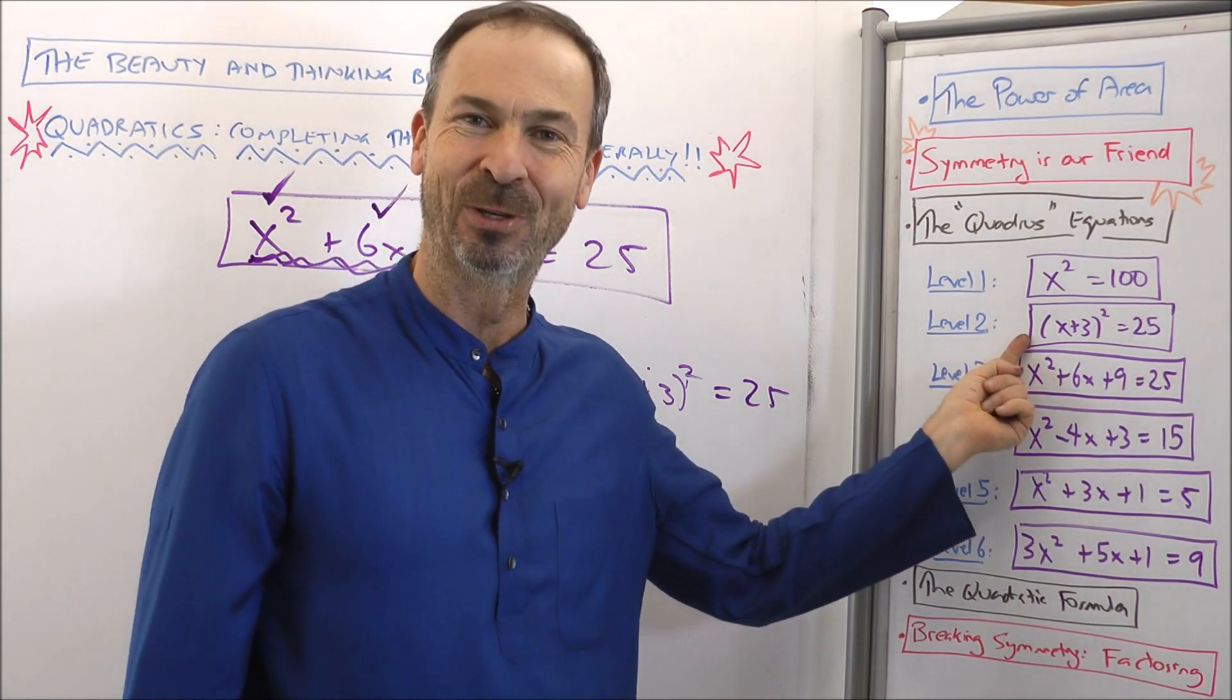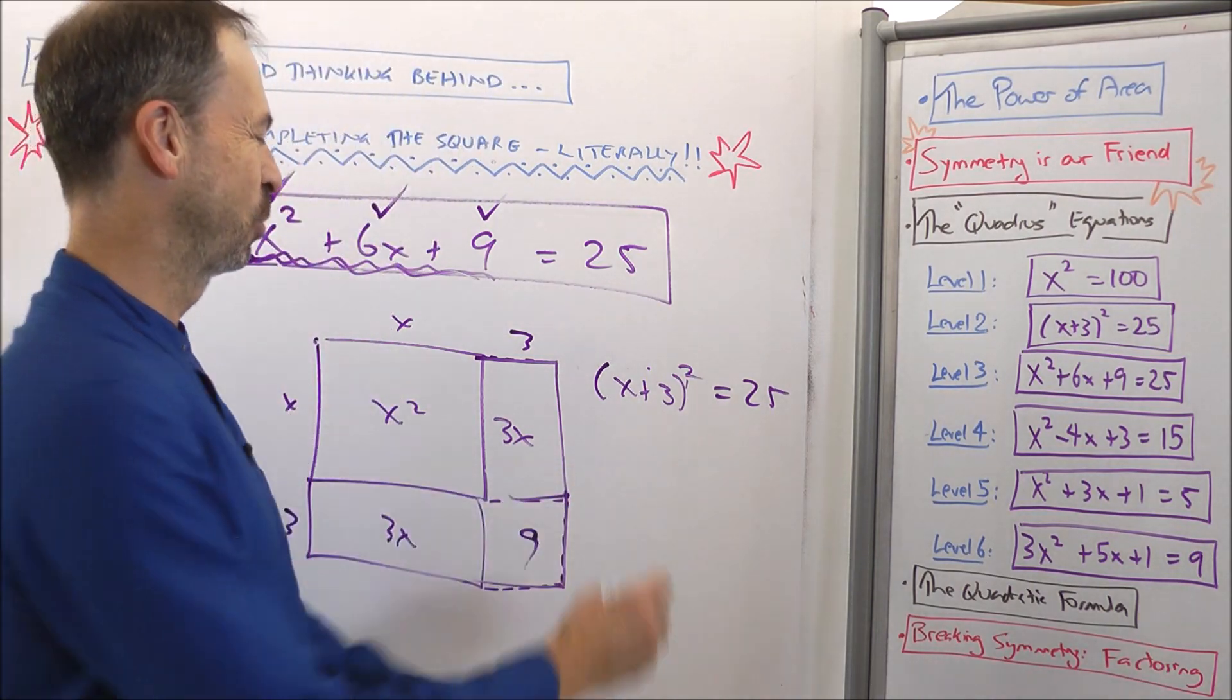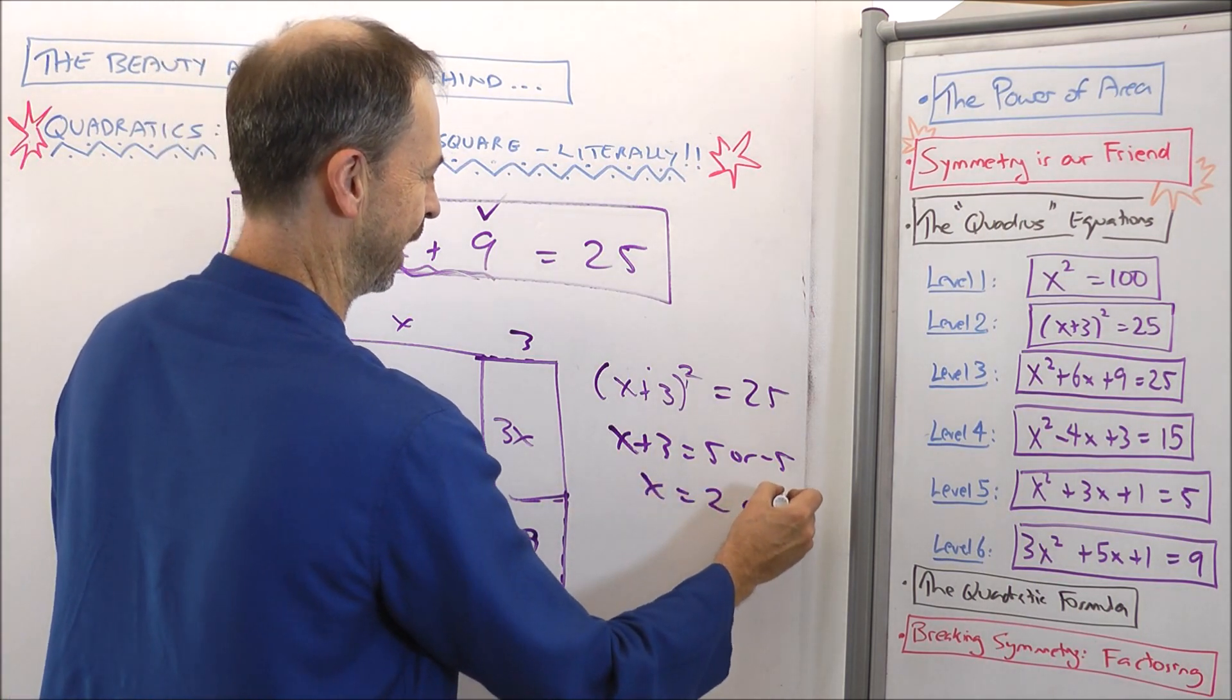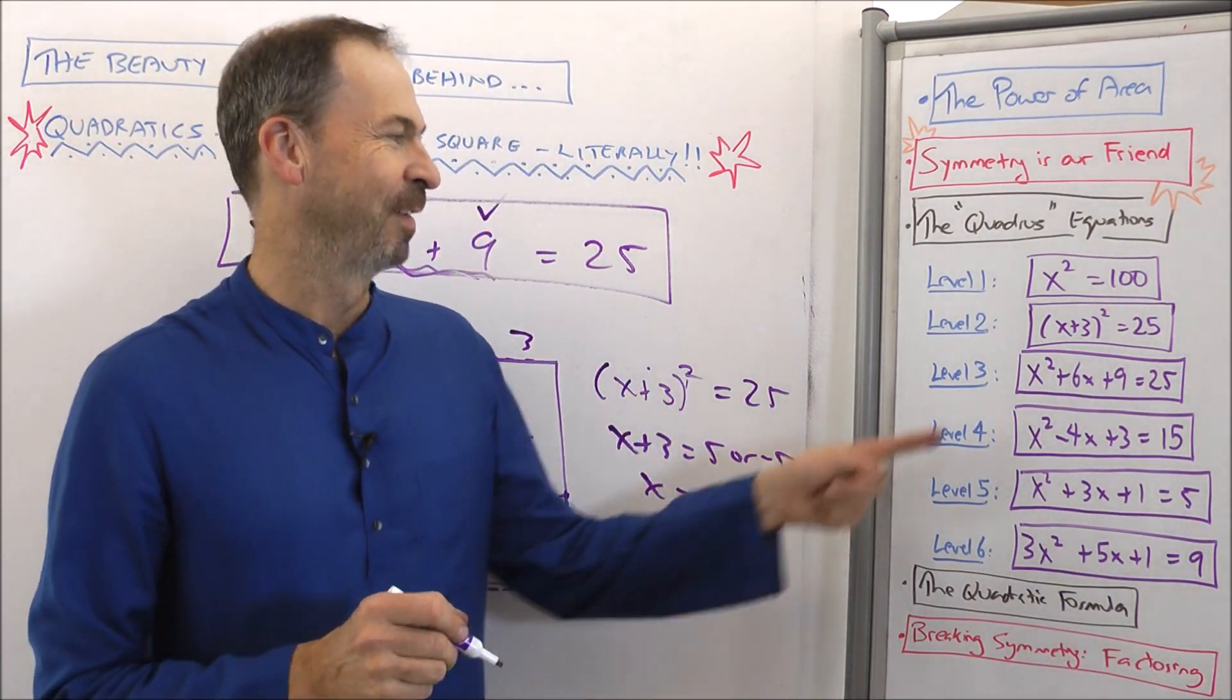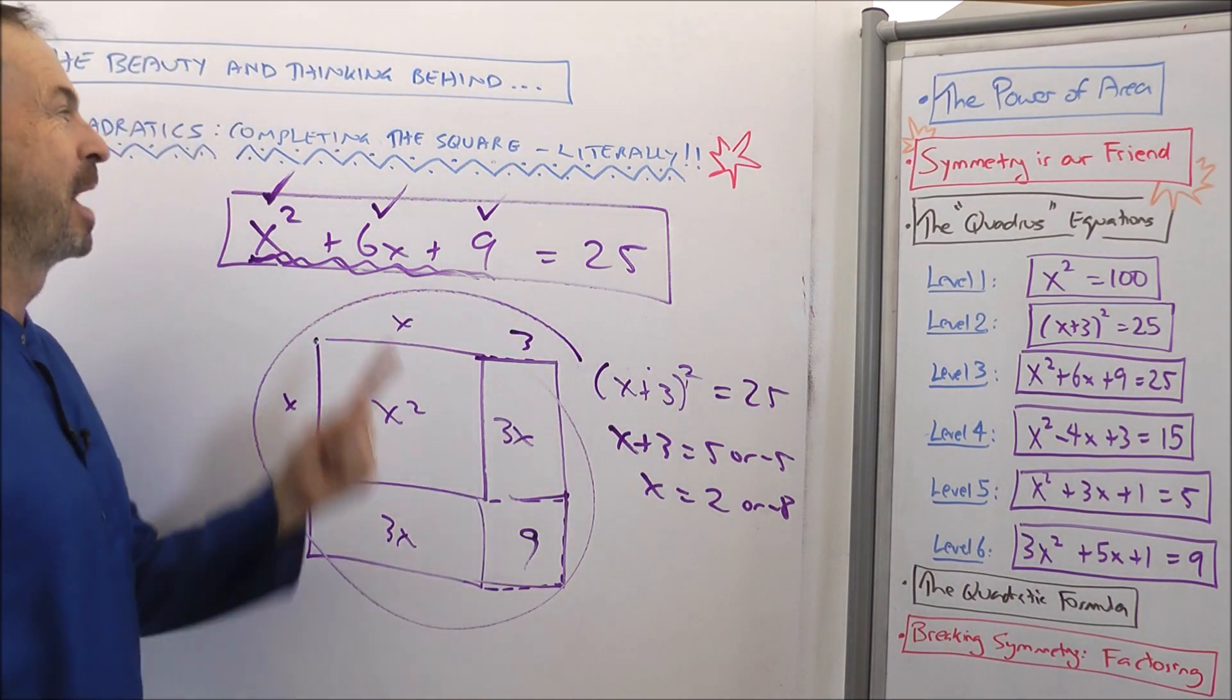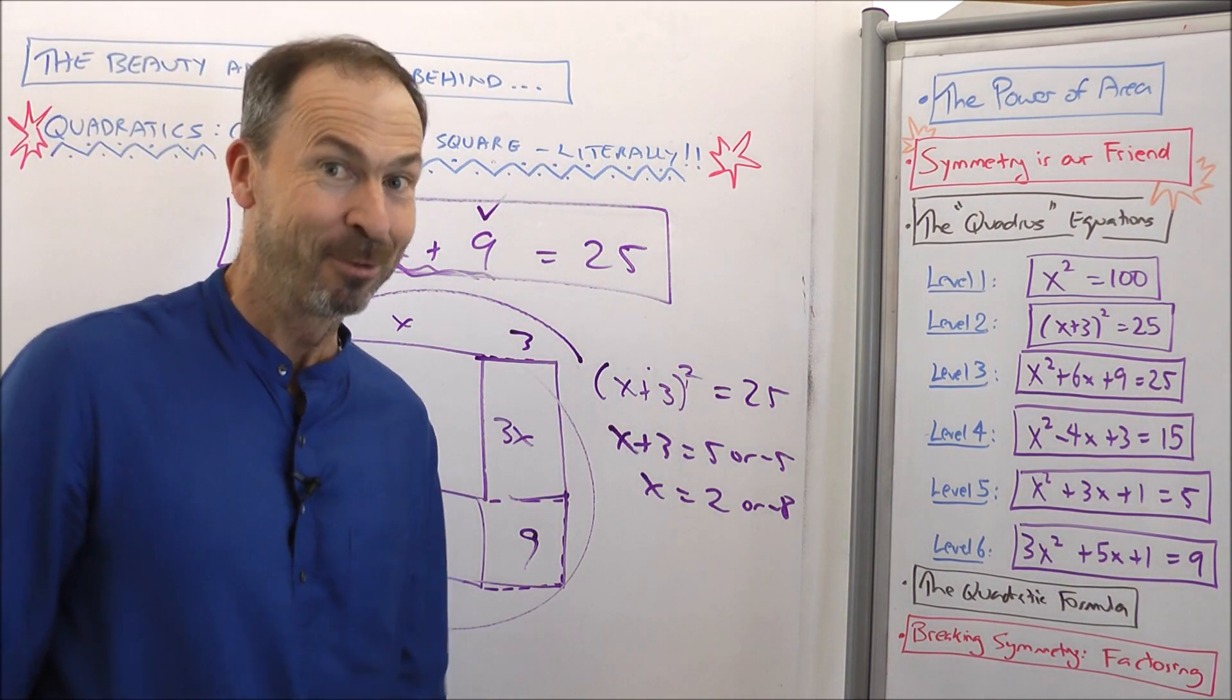And look, it's back to being level 2. This was really a level 2 problem in disguise. In fact, it's the one we did earlier. Something squared is 25. My something is either 5 or negative 5. Take away 3. That means x is either 2 or negative 8. Beautiful. Beautiful. So that's the trick of level 3. To realize it's really a level 2 question in disguise. And you can figure it out by completing the square. Literally draw the square. So let's do another example. Let me clean the board. I'll be right back and we'll do another example.